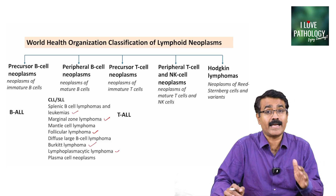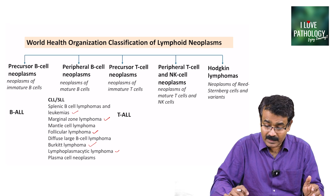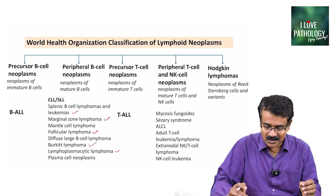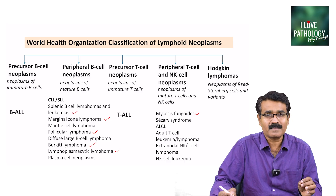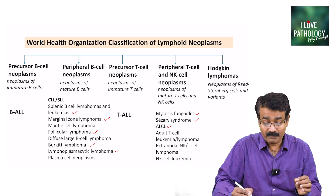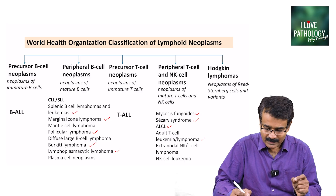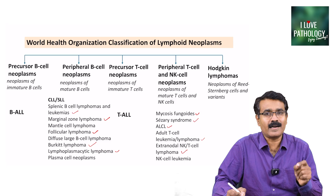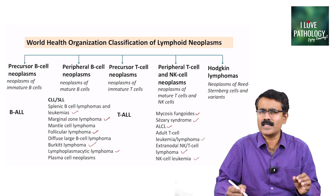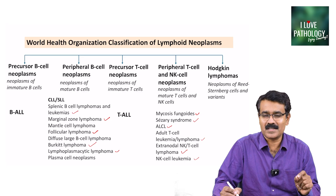The precursor T-cell neoplasm is T-ALL — T-cell type of acute lymphoblastic leukemia. The peripheral T-cell and NK-cell neoplasms include mycosis fungoides, Sézary syndrome, anaplastic large cell lymphoma, adult T-cell leukemia or lymphoma, and extranodal NK/T-cell lymphoma or NK-cell leukemia — these are a few of the mature T-cell and NK-cell neoplasms.